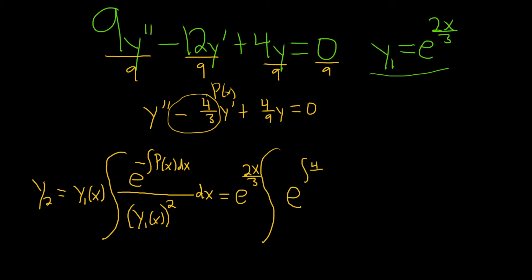So it'll be 4 thirds dx over, and then it's y sub 1 of x squared. So it's e to the 2x over 3, and this is squared, okay, dx.